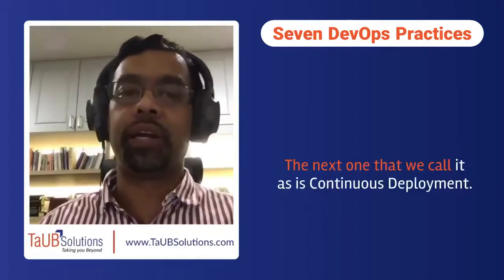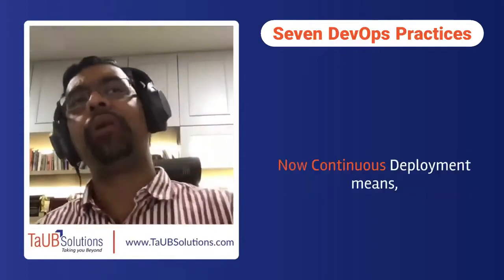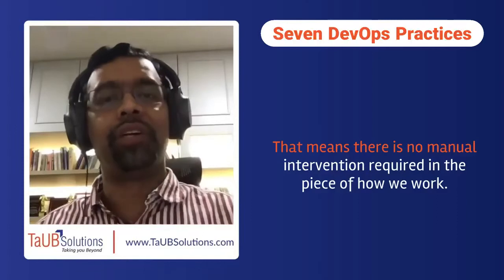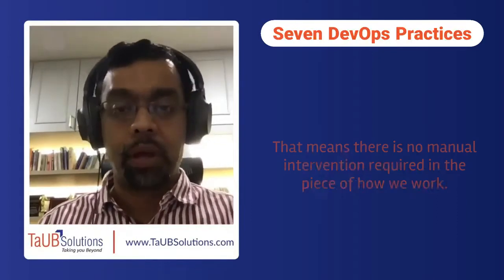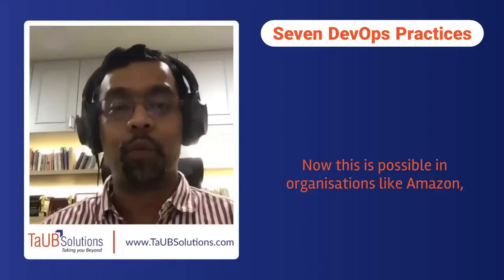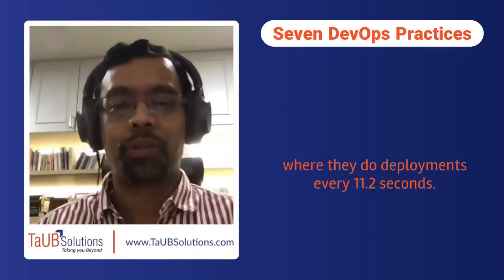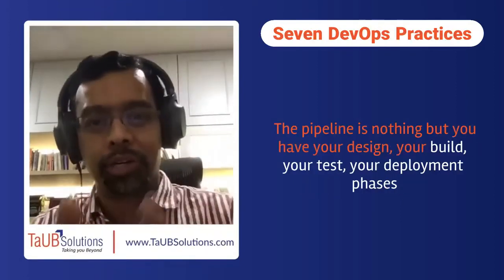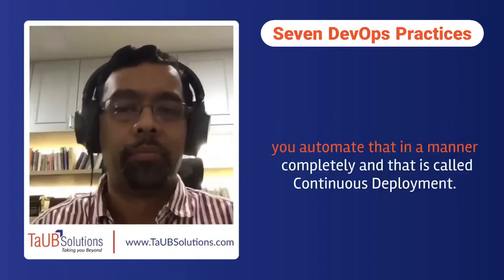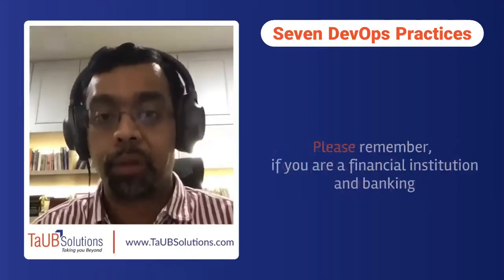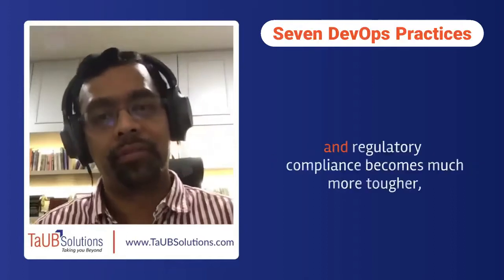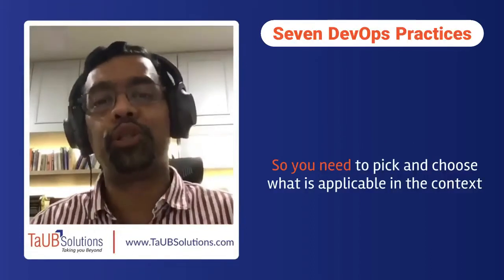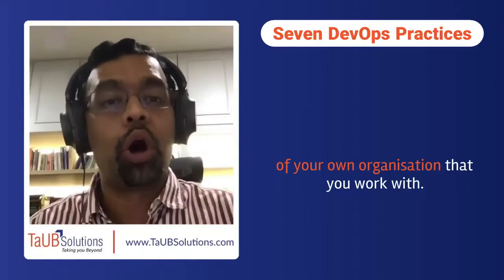The next one is continuous deployment, which means everything from code commit to deployment is fully automated — no manual intervention required. This is possible in organizations like Amazon, where they do deployments every 11.2 seconds. You automate the entire pipeline: design, build, test, and deployment phases. However, if you are a financial institution where banking and regulatory compliance is tougher, continuous deployment might not be a possibility. You need to pick and choose what is applicable in the context of your own organization.